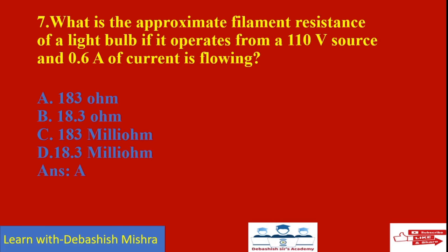What is the approximate filament resistance of a light bulb if it operates from a 110-volt source and 0.6 ampere of current is flowing? We need to find R. We know V = IR, so R = V/I. Therefore R = 110 divided by 0.6, which equals 183 ohms. So answer A is the correct answer.